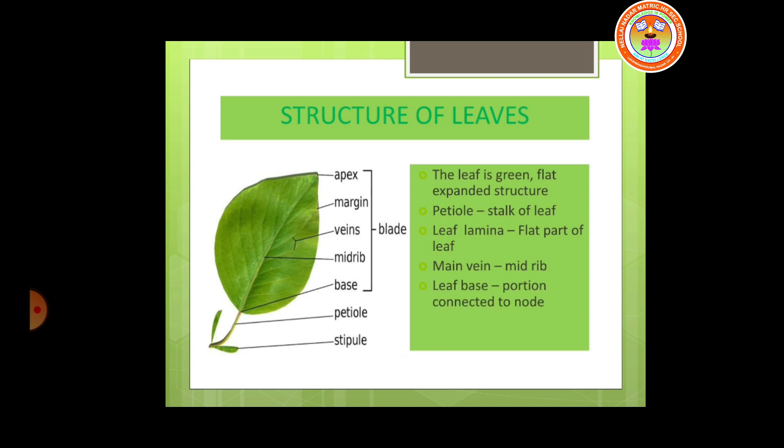The leaf base is the portion connected to the node — it is the place of attachment of the leaf to the node. Next is the stipule. Stipules are the lateral growth of a bud.